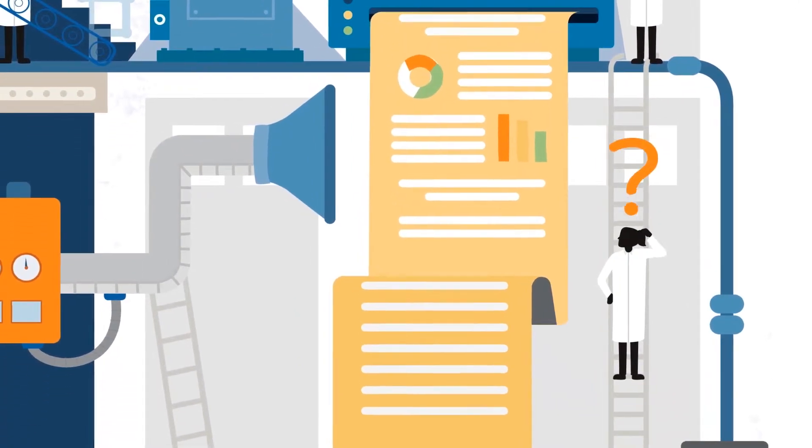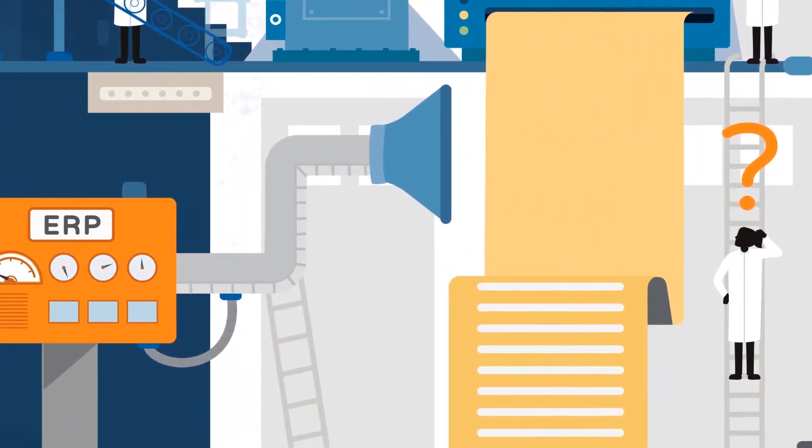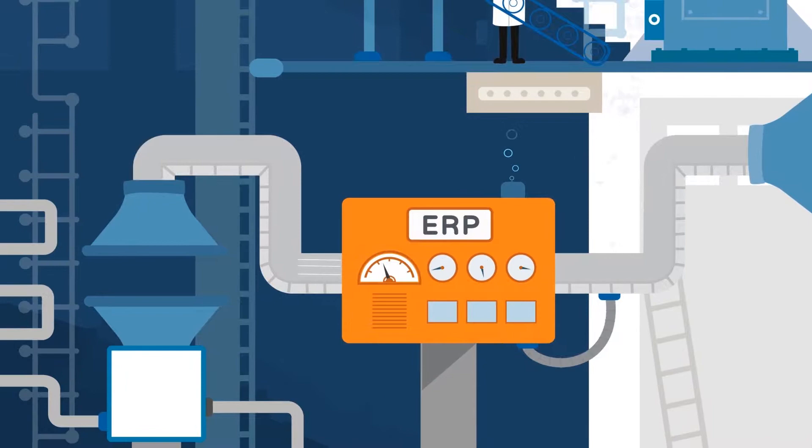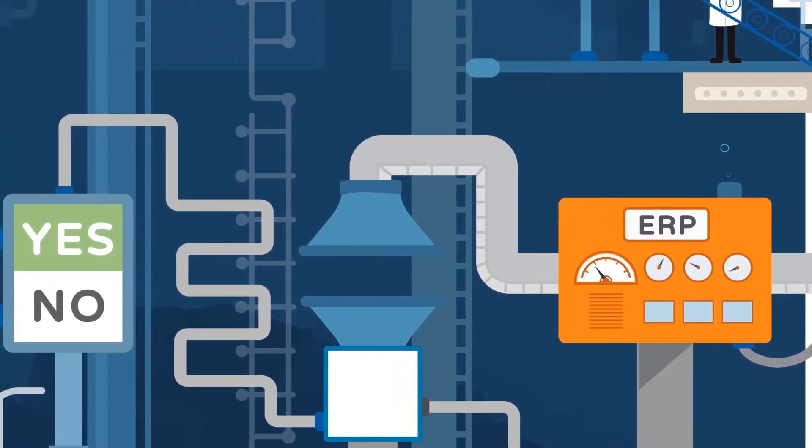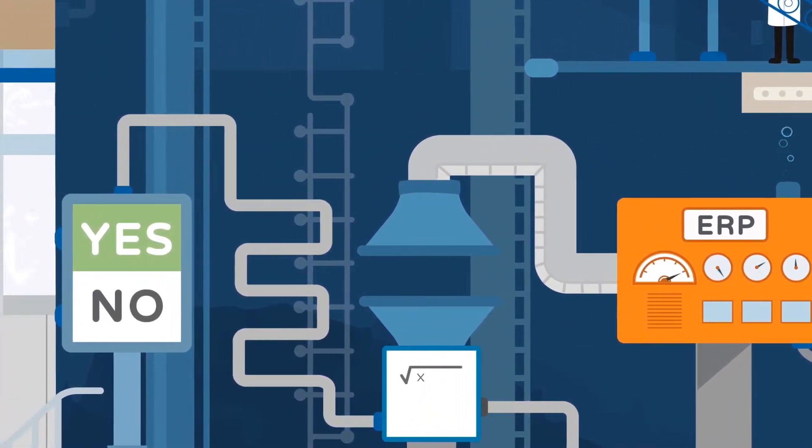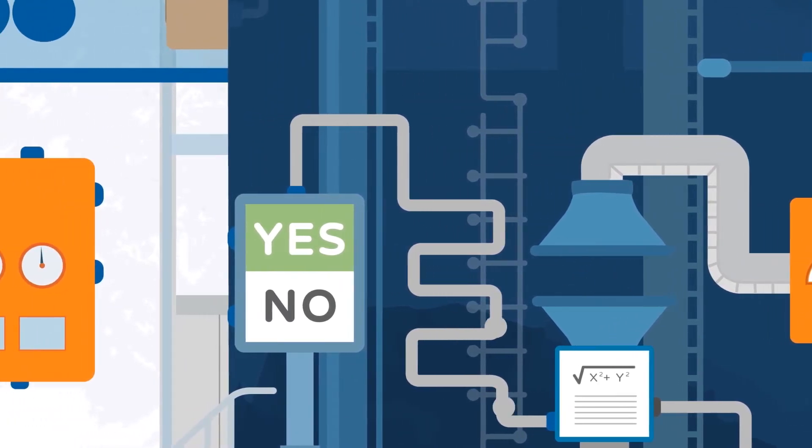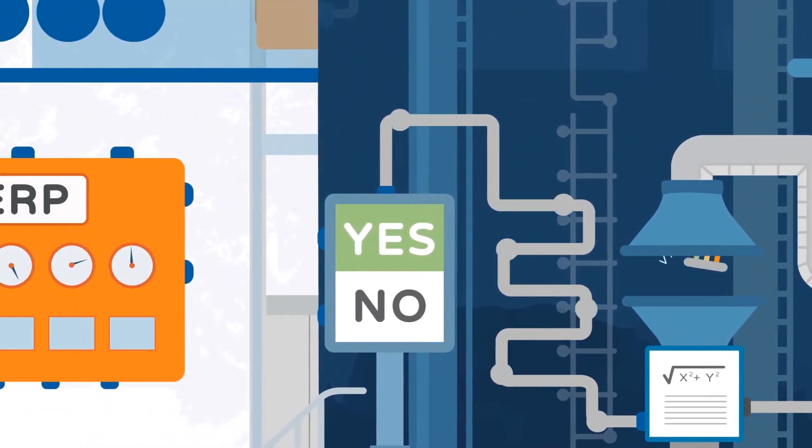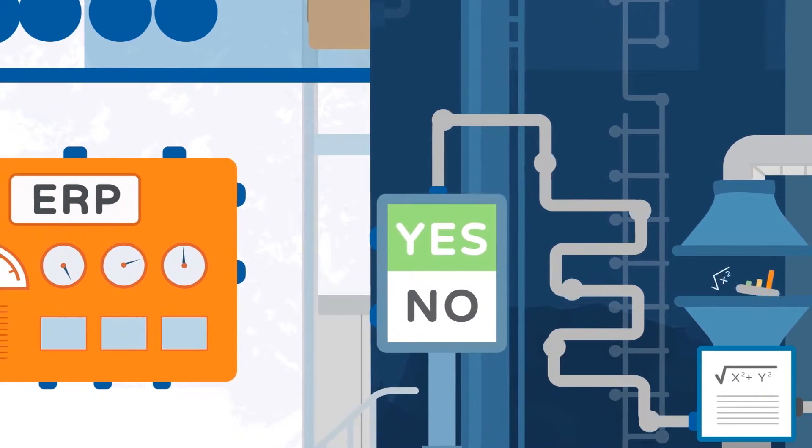But how do you make sense of all this data? For starters, a manufacturer's ERP system must have the ability to collect, filter, and analyze data at critical points in the manufacturing process so that users can make better decisions based on insights from real data.